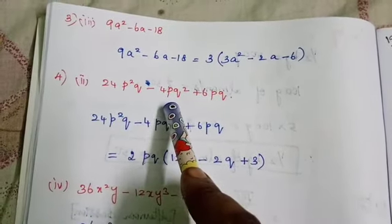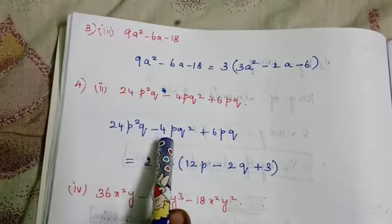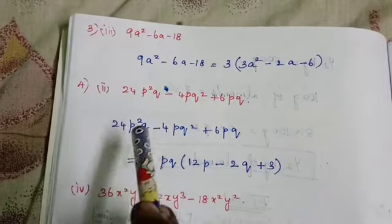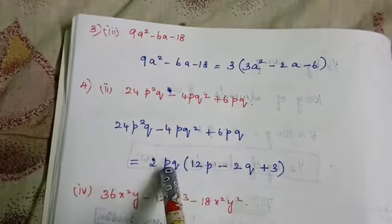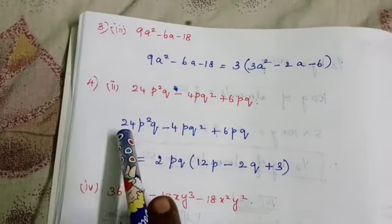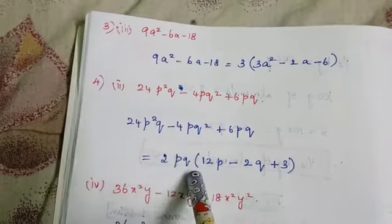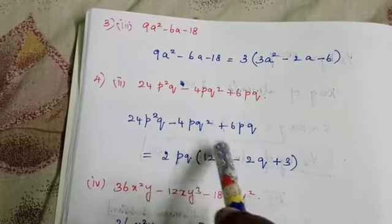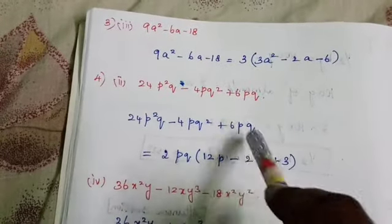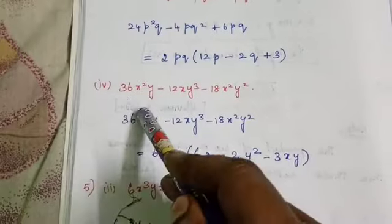Next: 24p²q - 4pq² + 6pq. First look at coefficients 24, 4, and 6 — all have 2 as common. For variable p: p², p, p — smallest is p, take out p. For variable q: q, q², q — smallest is q, take out q. Common factor is 2pq. Remaining: 24 ÷ 2 = 12, p² gives one remaining p, so 12p; 4 ÷ 2 = 2, q² gives one remaining q, so -2q; 6 ÷ 2 = 3, pq is fully taken out, so +3. Answer: 2pq(12p - 2q + 3).